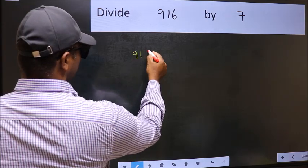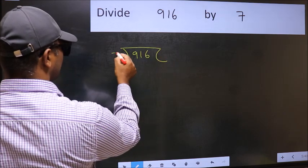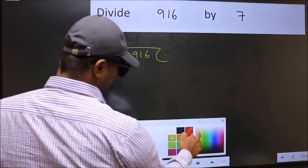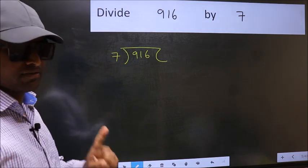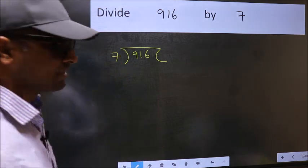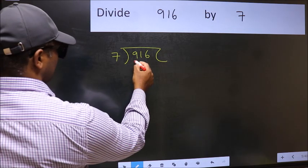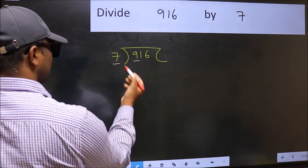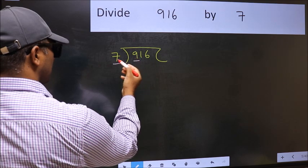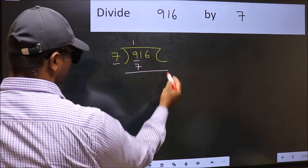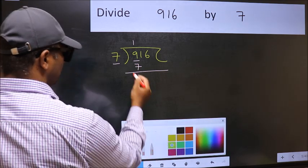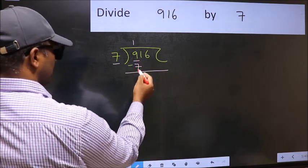916 and 7 here. This is step 1. Next, here we have 9 and here 7. A number close to 9 in the 7 table is 7 times 1. Now you should subtract: 9 minus 7 equals 2.